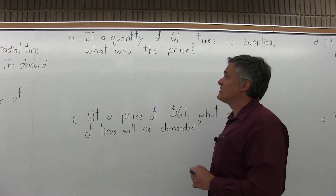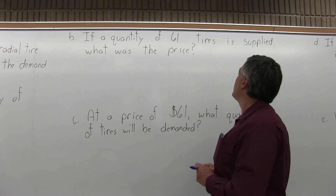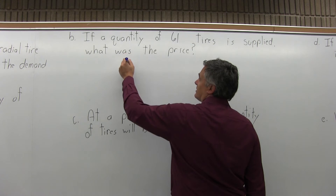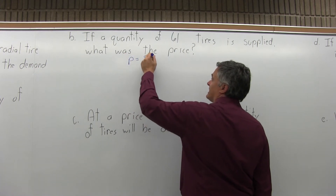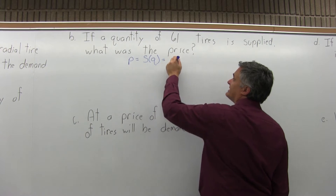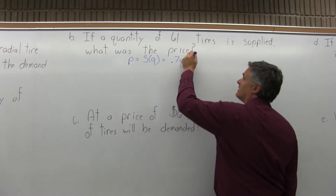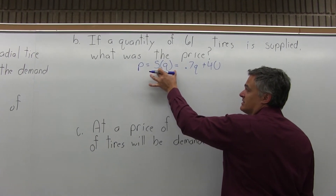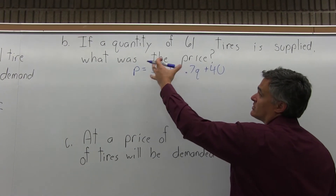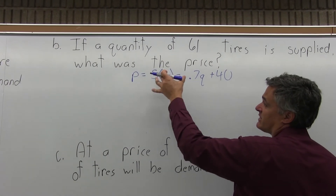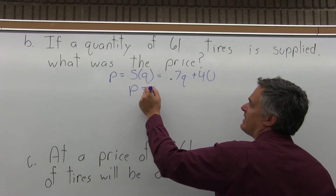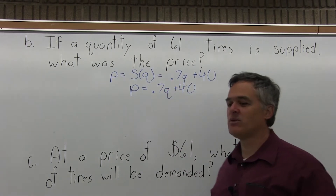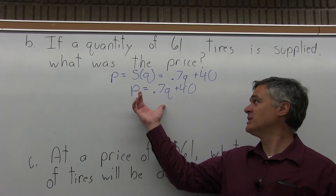Part B: if a quantity of 61 tires is supplied, what was the price? Because it says supply, we start with the supply equation: P equals S(Q) equals 0.7Q plus 40. The S(Q) is just part of the equation to distinguish it from demand. Once I've chosen the correct equation, I don't need that middle part — it makes the equation seem more complicated than it really is. So I'll write it as P equals 0.7Q plus 40.